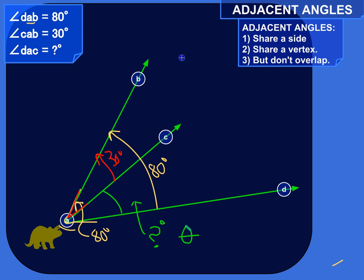So let's set that up. So we've got theta, that's our unknown, plus 30 degrees is equal to this full 80 degrees, the full angle that they both make up, 80 degrees. So theta plus 30 degrees is equal to 80 degrees.